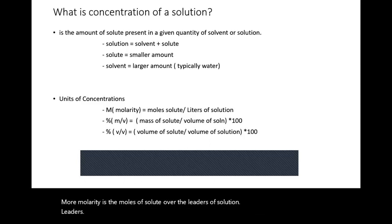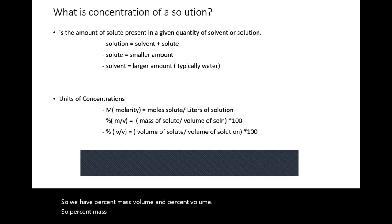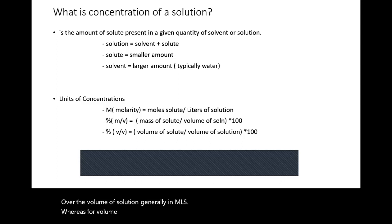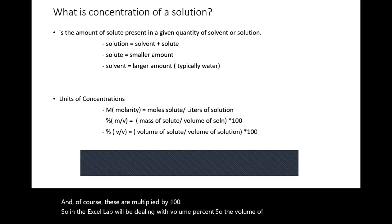You'll learn more about molarity in Gen Chem 1. The next units deal with percents — we have percent mass/volume and percent volume/volume. Percent mass/volume is the mass of solute over the volume of solution generally in milliliters, whereas percent volume/volume is the volume of solute over the volume of solution, multiplied by 100. In the Excel lab, we'll be dealing with volume/volume percent.